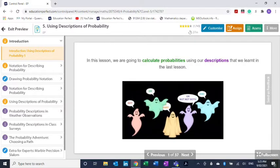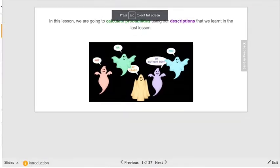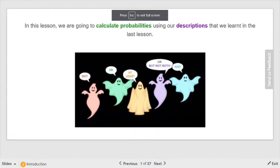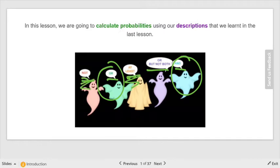The first thing we're going to do in this lesson is look at calculating probabilities using the descriptions that we're actually going to learn now. Here are some of them: the word not, or, at least, or but not both, and and. We're going to concentrate on the most common ones, which are or and and, but you're going to see some at least and some not as well.